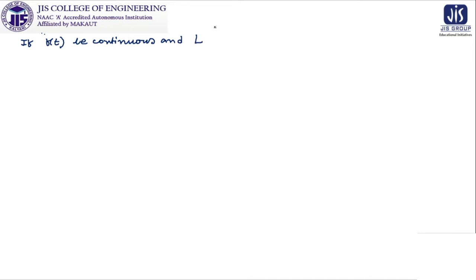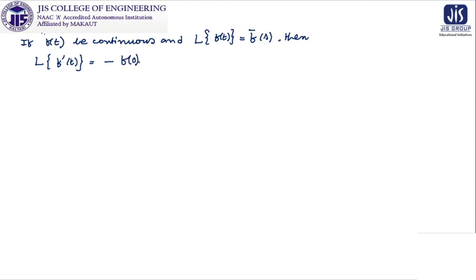The property is: if f(t) is continuous and the Laplace Transform of f(t) is F(s), then the Laplace Transform of the derivative f'(t) will be minus f(0) plus s·F̄(s). So it is clearly noted that if F̄(s) is known and we can find f(0), we can find the Laplace Transform of f'(t) using this property.